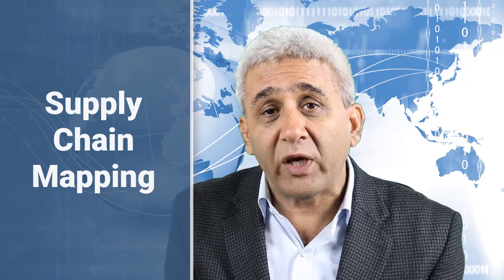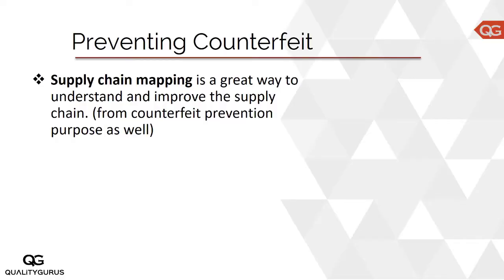If you map your supply chain, you can get a good idea of where counterfeit material can enter your system. This is a great way to understand and improve your supply chain — good for counterfeit prevention, and also useful for identifying where you can save money and improve operations. Supply chain mapping is an important tool.